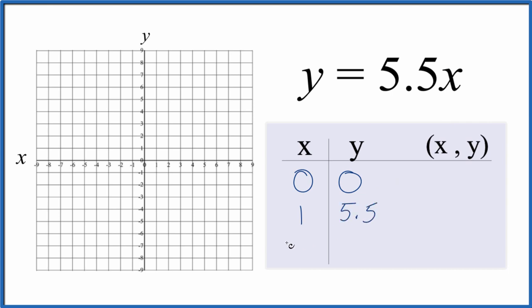And then how about negative 1? Negative 1 times 5.5, that's negative 5.5. And these are the points we'll graph for the equation y equals 5.5x.